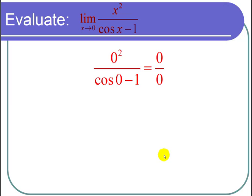Our first step is to plug in. We plug in x equals 0 and get 0 squared, which is 0, divided by cosine of 0. Cosine of 0 is 1, and 1 minus 1 is 0, so we get 0 over 0.